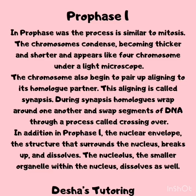After interphase, the cell moves to prophase 1. In this process, the chromosomes condense, becoming thicker and shorter and appearing like four chromosomes under a light microscope. The chromosomes also begin to pair up, aligning to their homologue partner — this aligning is called synapsis. During synapsis, homologues wrap around one another and swap segments of DNA through a process called crossing over. In addition, in prophase 1, the nuclear envelope breaks up and dissolves, and the nucleolus dissolves as well.